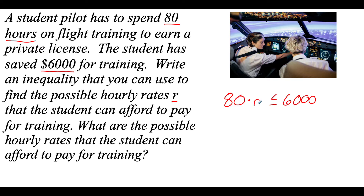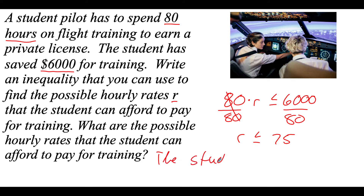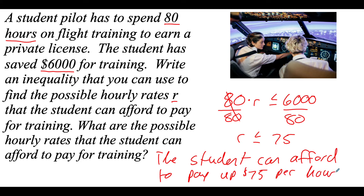Now we solve to find the actual hourly rates the student can afford. We divide both sides by 80, giving us r is less than or equal to 75. In context, r represents the hourly rate, so the student can afford to pay up to $75 per hour. At $75 per hour they spend all $6,000, but if they find a rate less than $75 per hour they'll save some money.